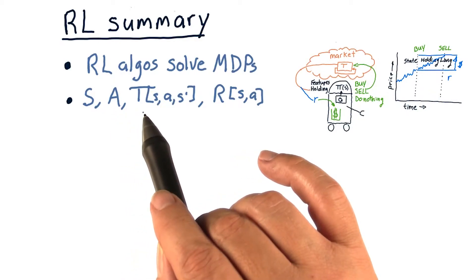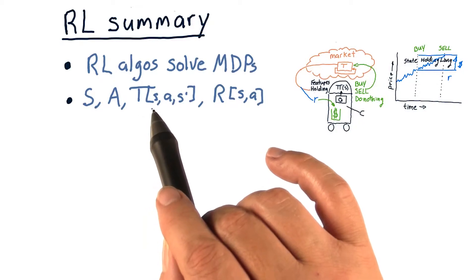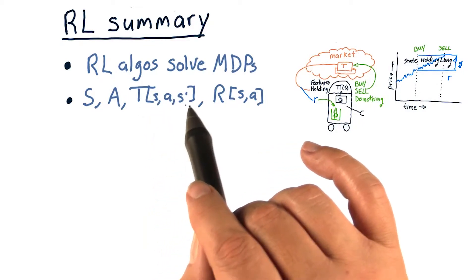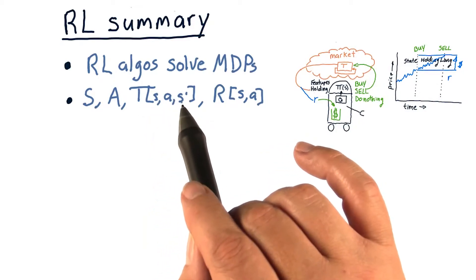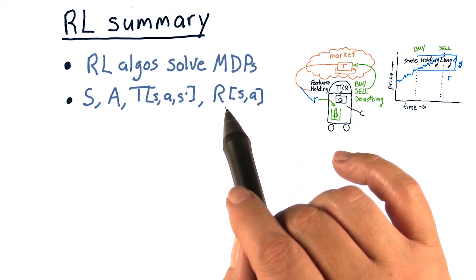T is a transition probability, which is given I'm in state S, I take action A, what's the probability I'll end up in state S prime. And R is the reward function.